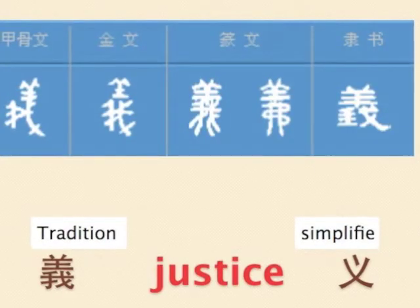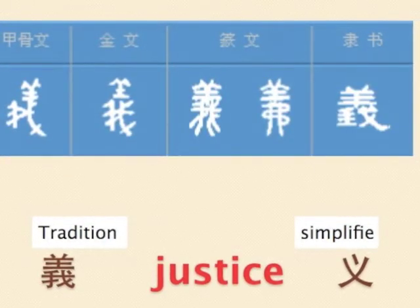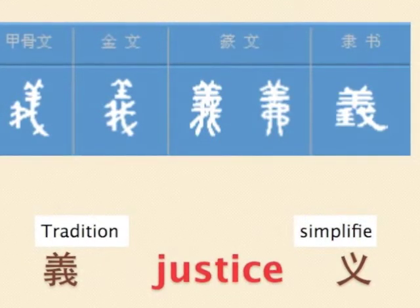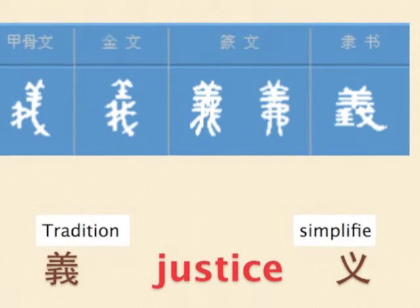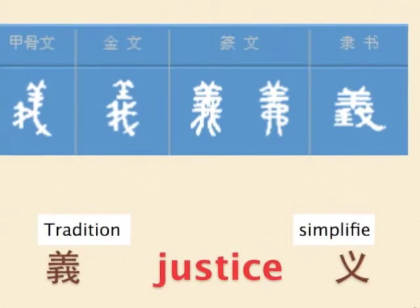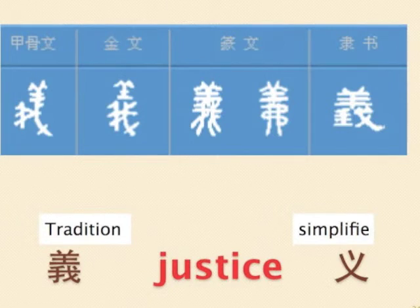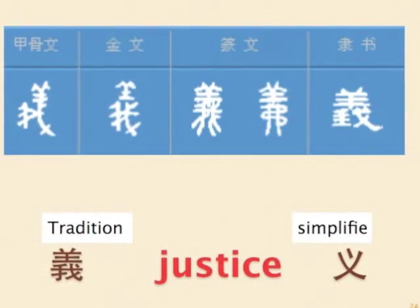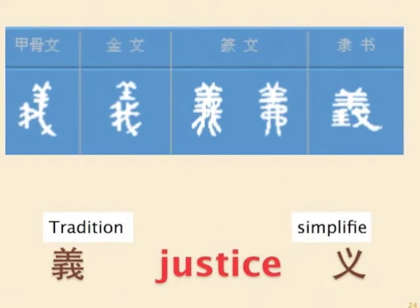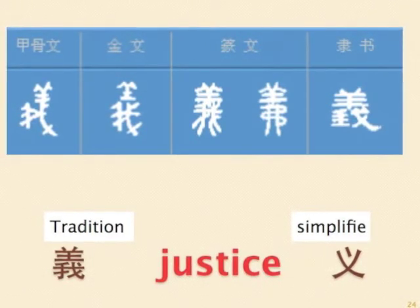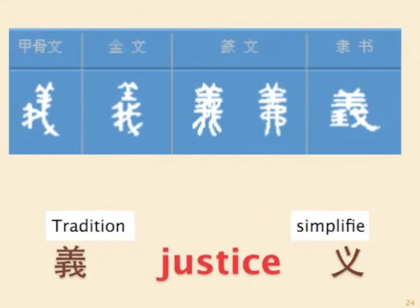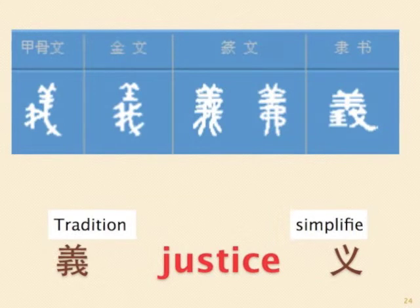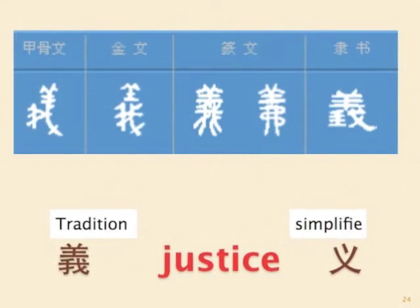Next word: justice. The ancient script shows a sheep on the top and a wall at the bottom. In ancient times, before initiating a war, worshipping was necessary. The sheep was used to worship and means auspicious. The simplified form uses a cross meaning 'to kill' and a point meaning 'righteous', together meaning it is righteous to kill.